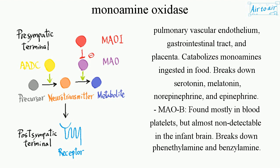MAO-B is found mostly in blood platelets, but is almost non-detectable in the infant brain. It breaks down phenethylamine and benzylamine.